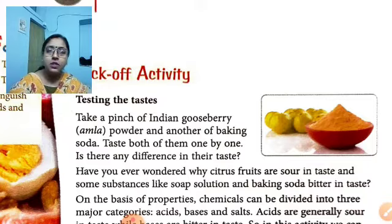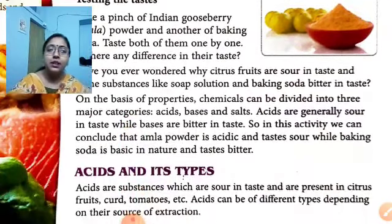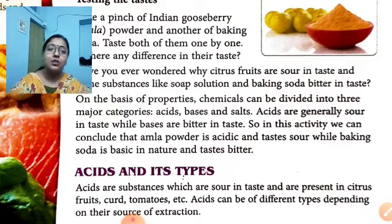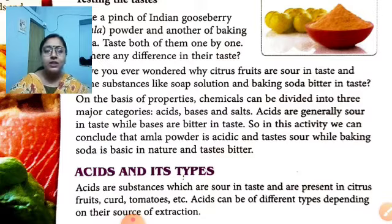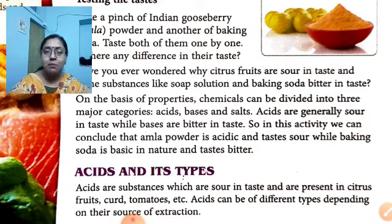Have you ever wondered why citrus foods like lemon, oranges, and mossami are sour in taste? And some substances like soap and baking soda are bitter in taste? On the basis of their properties, chemicals can be divided into 3 major categories: acids, bases and salts. Acids are generally sour in taste while bases are bitter in taste. We can conclude that avala powder is acidic and tastes sour, while baking soda is basic in nature and tastes bitter. Acid and base combine to form salts — a common example is common salt, used in daily cooking.